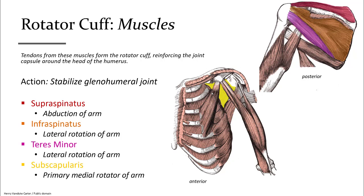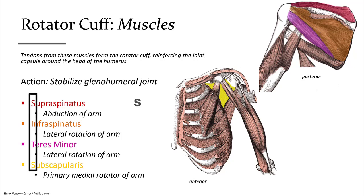Supraspinatus, shown in red, is located above the spine of the scapula. Infraspinatus, shown in orange, is located below the spine of the scapula. Teres minor, in pink, is just below infraspinatus. It is a rotator cuff muscle because its attachment is just behind the head of the humerus, not on the shaft like teres major. Finally, in yellow and only seen from the anterior view, is subscapularis. One way to remember all four of these muscles is SITS: supraspinatus, infraspinatus, teres minor, and subscapularis.